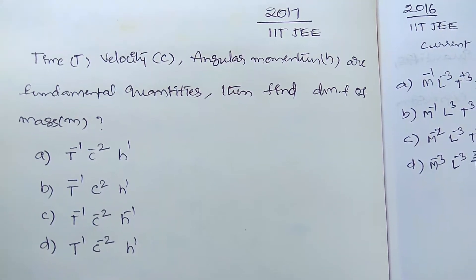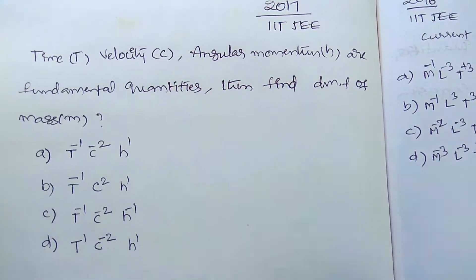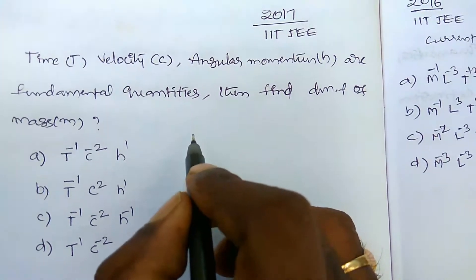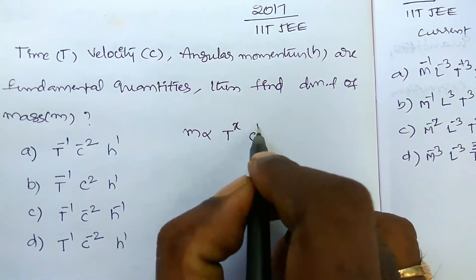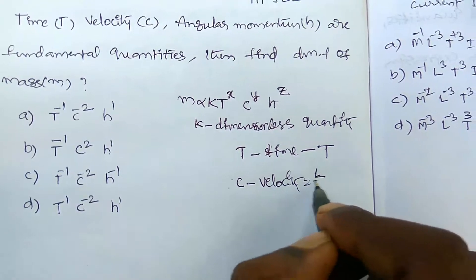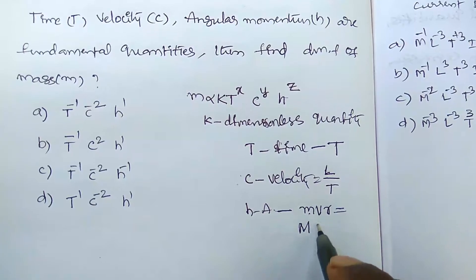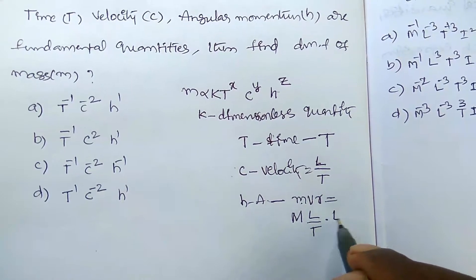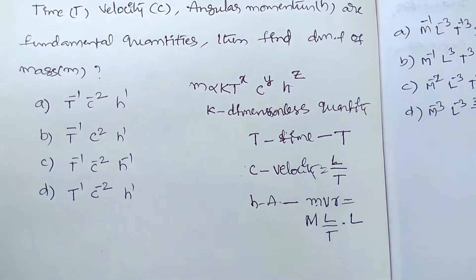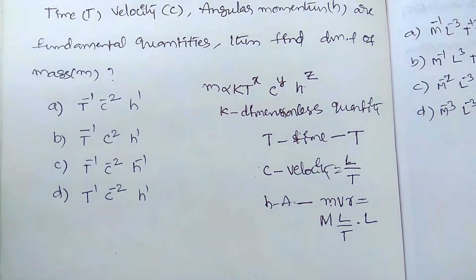So here, mass m is directly proportional to t raised to power x, c raised to power y, and h raised to power z. There is a dimensionless constant k. So we can write: m = k · t^x · c^y · h^z. Now, t stands for time, and the dimension of time is T.